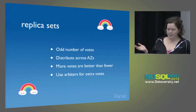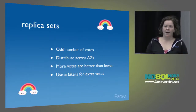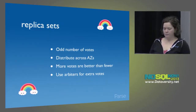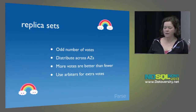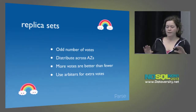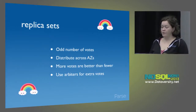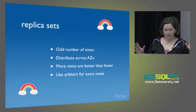The most important things to remember about replica sets: you need to have at least three votes. More votes are better than fewer, because you need at least 51% of your votes to elect a master. You can have a maximum of seven votes, and you should always have an odd number of votes. If you're running on AWS, distribute those votes as evenly as possible across as many availability zones as possible. For a three-node replica set, use three availability zones. And if you need to fill in votes in odd places to fulfill these rules, you can always use arbiters.